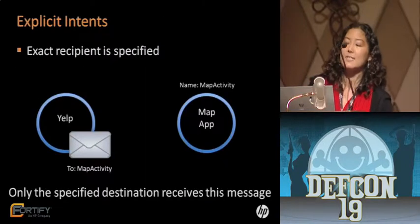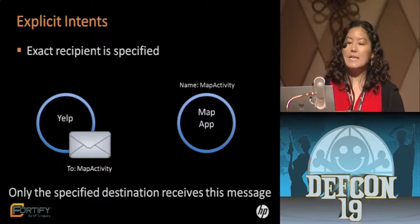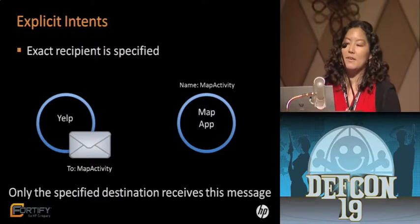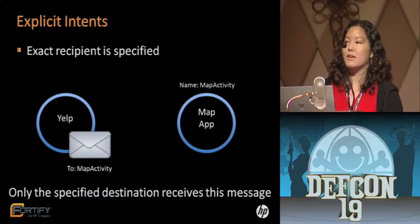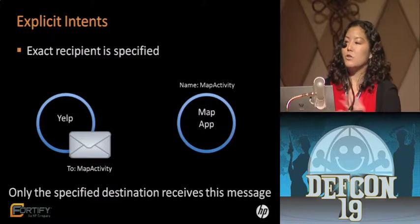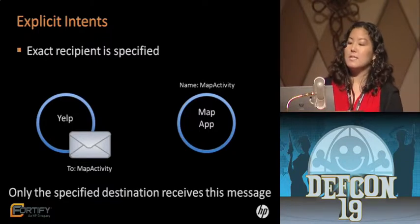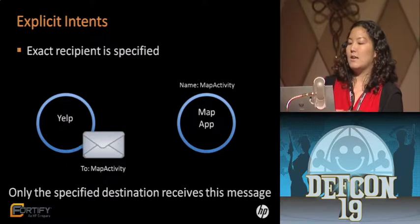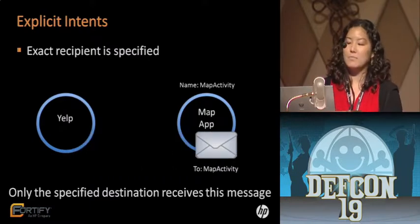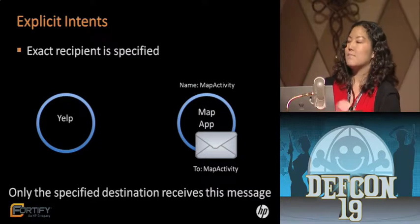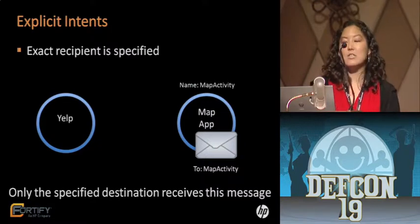There are two types of intents: explicit intents and implicit intents. Explicit intents are intents where the sender specifies the recipient by name. For example, in the Yelp application, there's a feature that shows where a restaurant is on a map. If Yelp wants to use a particular map application, it creates an explicit intent addressed to that application, and sending the intent launches it. With explicit intents, only the specified destination receives the message.